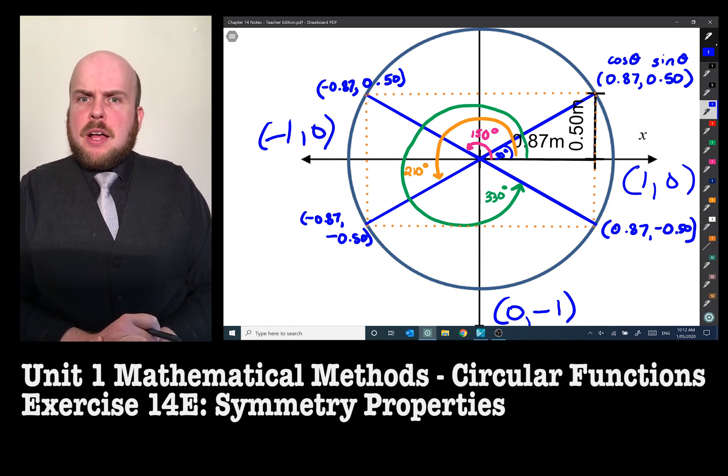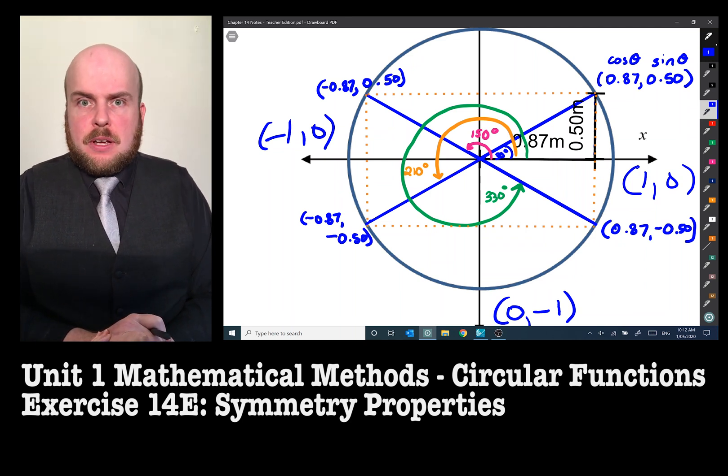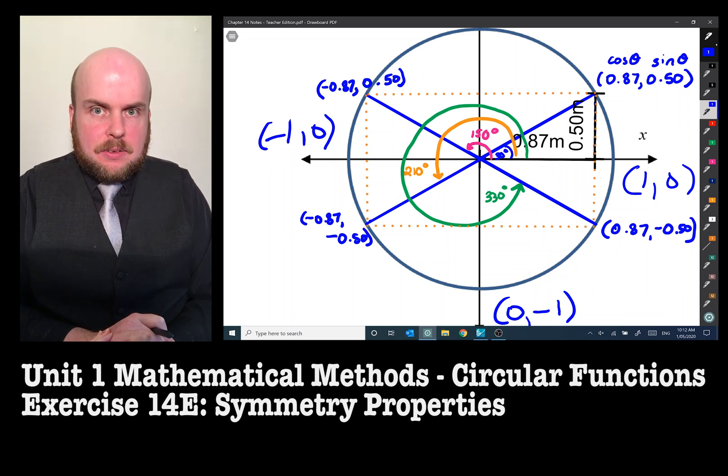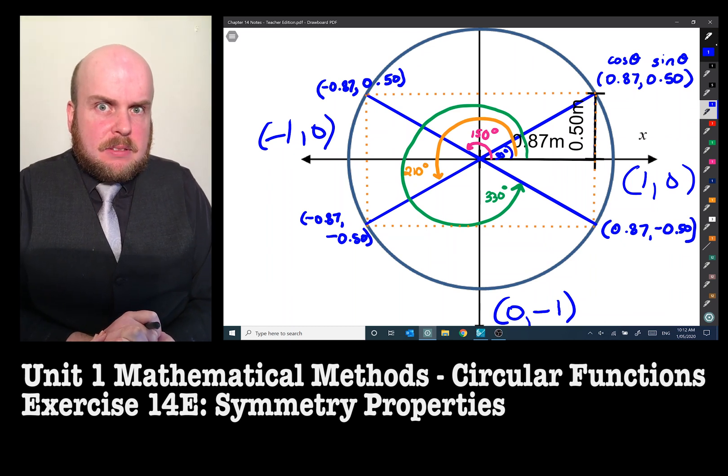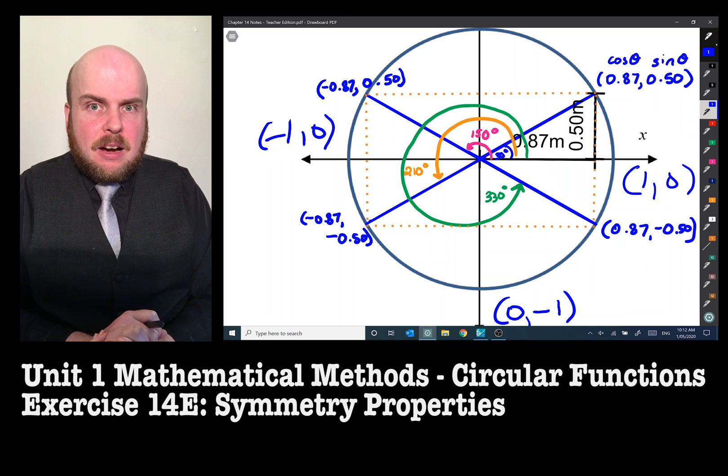So rather than having the table and a unit circle to go and confirm things, how can we use the numbers themselves to help prove these sorts of things? Did I know in advance which ones were going to be positive and negative? Well, actually I kind of did.